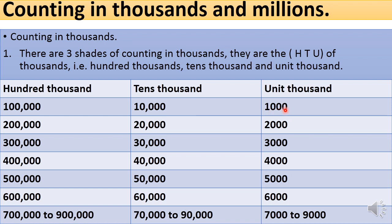In the unit thousands we have: 1,000; 2,000; 3,000; 4,000; 5,000; 6,000; 7,000; 8,000; and 9,000. That is it for counting by the values or shades of thousands.